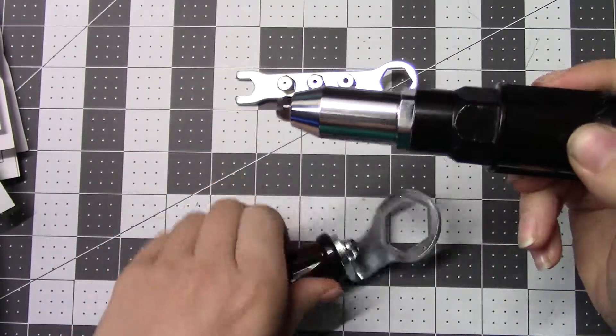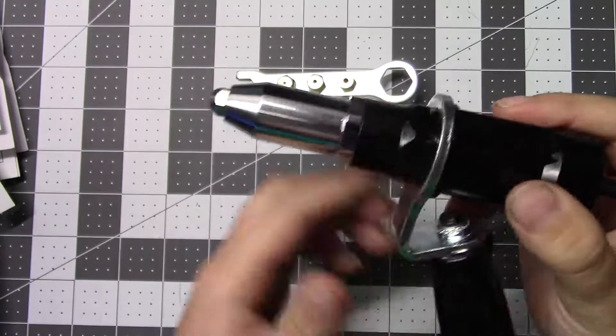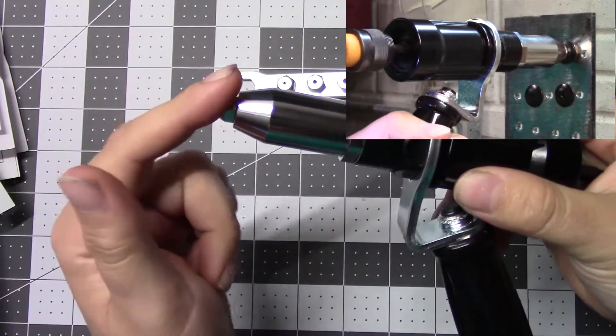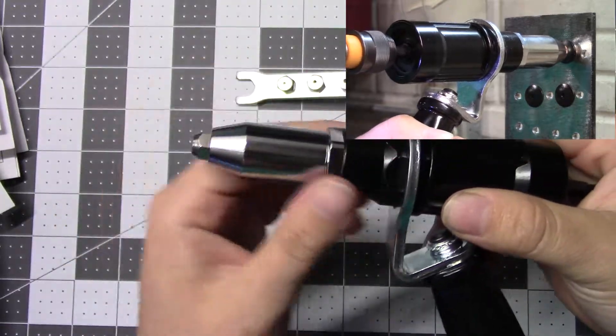You put this in your cordless drill, slip this handle on, run your drill forward, it will pull the rivet, pull it tight, pull the mandrel out.